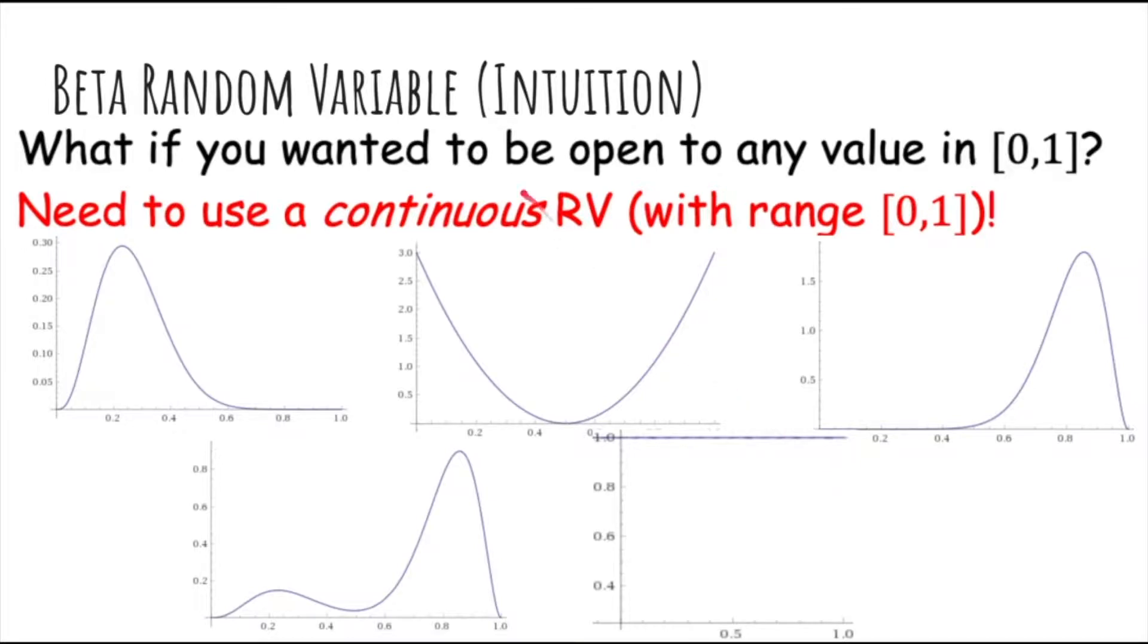But what if you wanted it to be possible for it to be any value between 0 and 1, because probabilities can be any real number in this range? We need a continuous random variable.